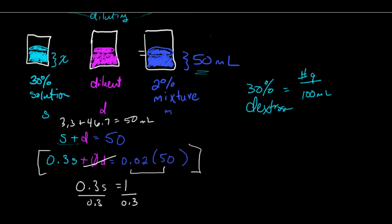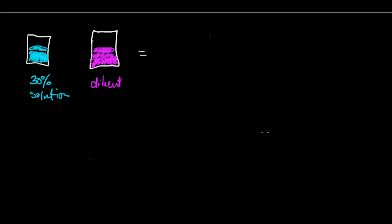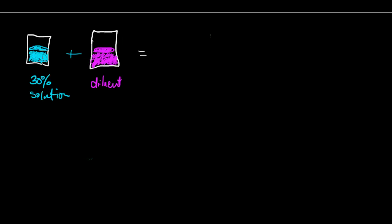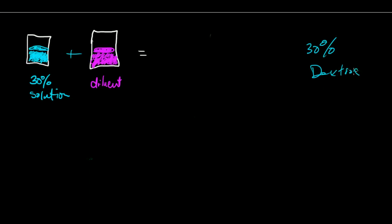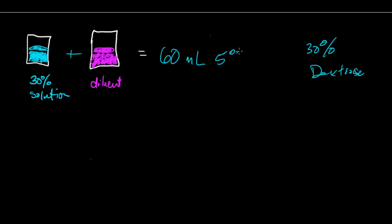So let's see if we can't generalize this into a formula that we can use for any diluting situation. In this case we want to add 30% that same 30% stock solution, so we've got a 30% dextrose solution and we want to reduce that down to a let's say 60 milliliters of a 5% solution.